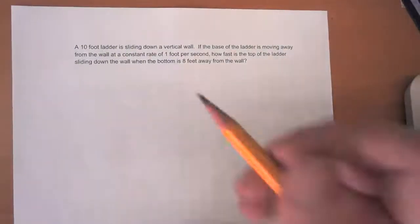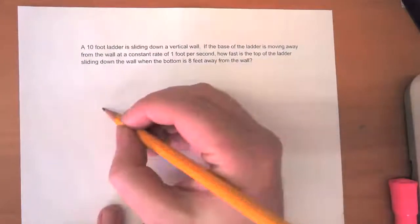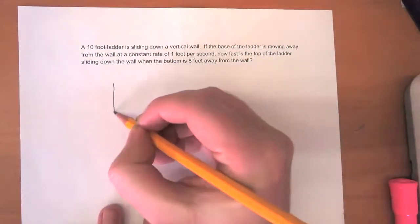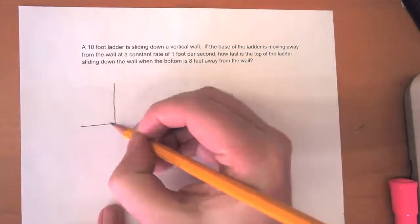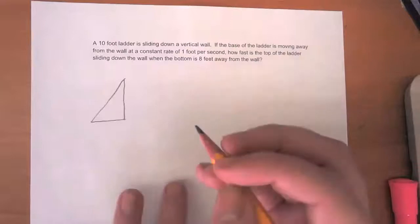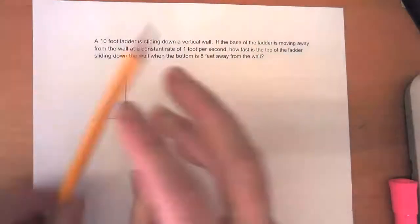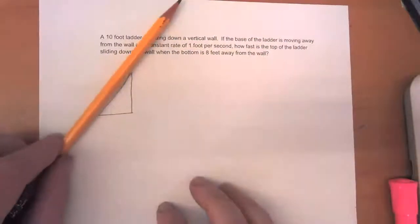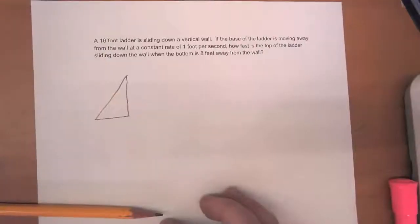Let me draw a diagram that's going to give us a sense of what's going on here. So here's my wall, and here's the floor, and here is my ladder. And so what I know is that this ladder is sliding down the wall, so it's going to kind of do that kind of thing over time.